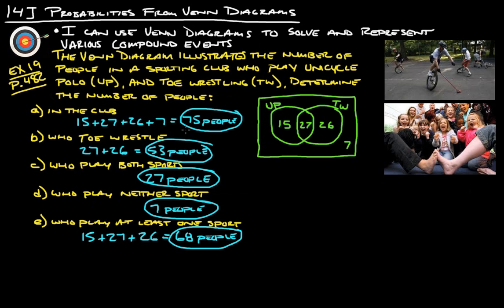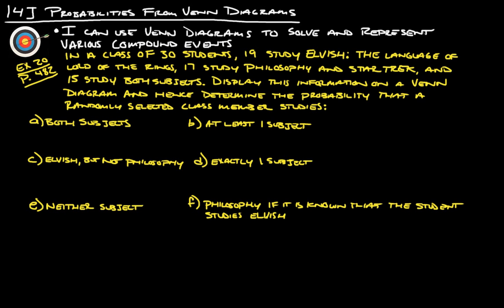Anyway, let's take a look at the second and last example here. In a class of 30 students, 19 study Elvish, the language of Lord of the Rings, 17 study philosophy and Star Trek, and by the way these are both actual classes offered at college universities. 15 people study both subjects. Display this information on a Venn diagram and hence determine the probability that a randomly selected class member studies both subjects, at least one, Elvish but not philosophy, exactly one, neither subject, philosophy given that the student studies Elvish.